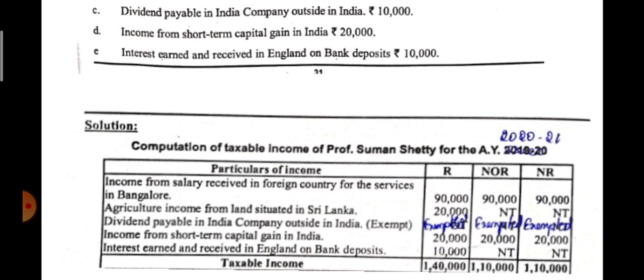There is a textual mistake in the question but dividend payable by an Indian company — if dividend is received from an Indian company, it is exempt from tax. So show 'not taxable' or 'exempted' in all three columns. Exempted in all three columns. For income from short-term capital gain in India — since the short-term capital gain is earned in India, that is enough. You can assume it is received in India too. It is taxable in case of all three.